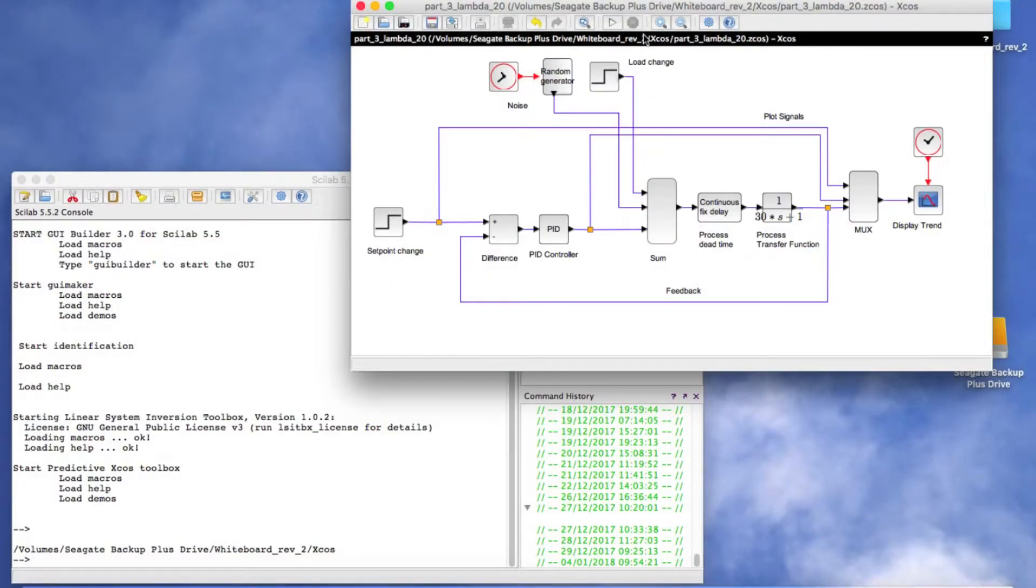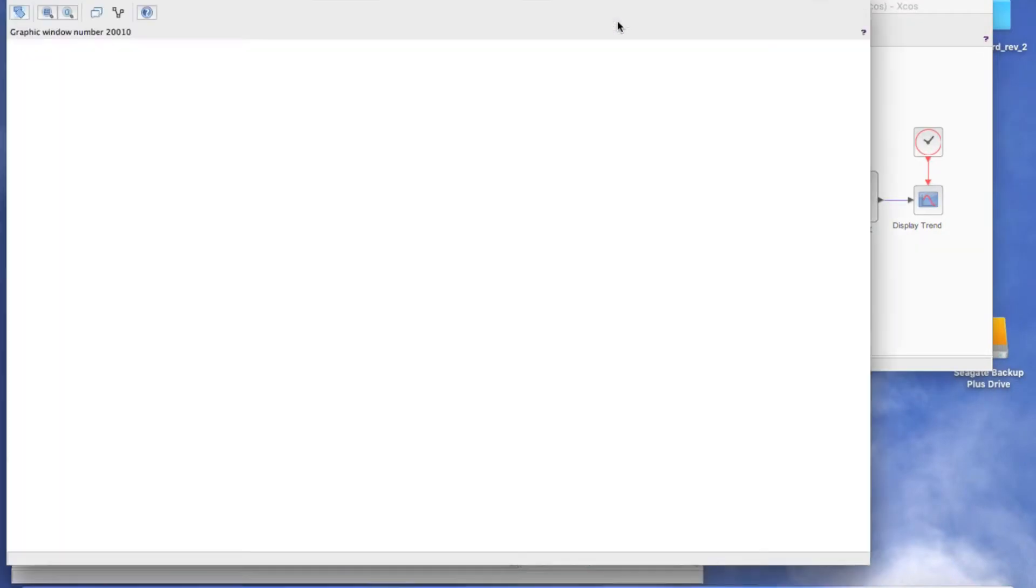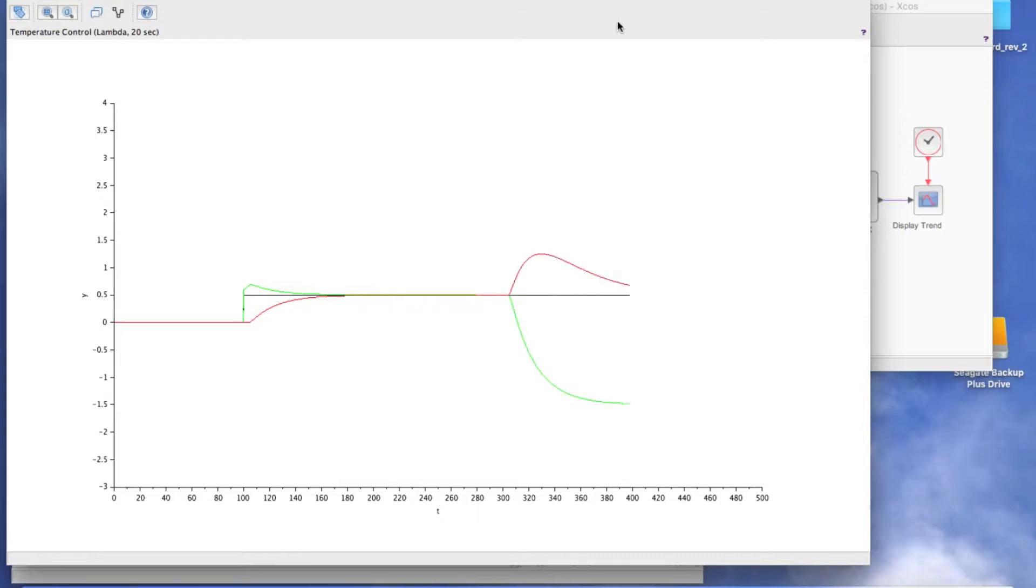This is our heat exchanger example that we looked at in part 2. We will use the lambda tuning that is designed to target a 20 second response. The response is smooth and non-oscillatory.